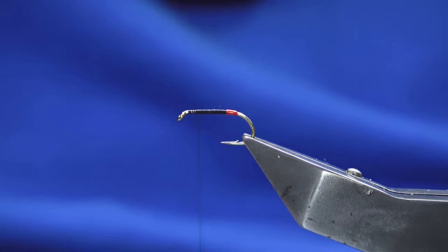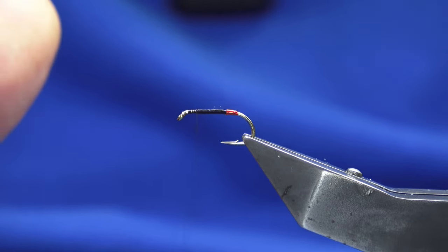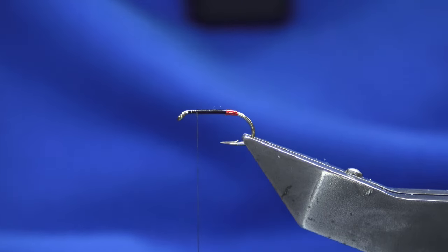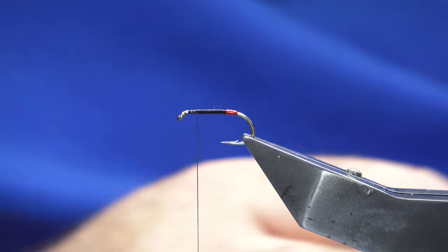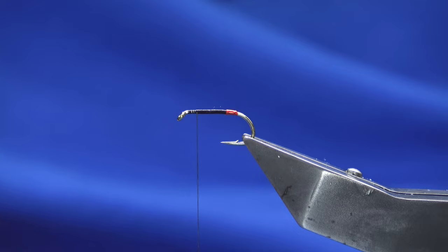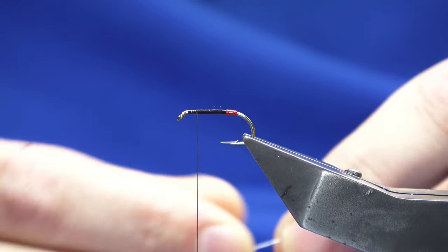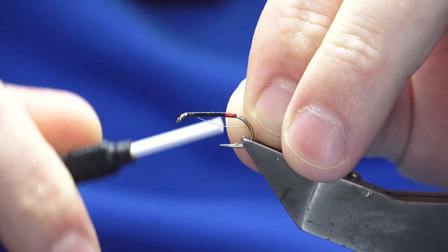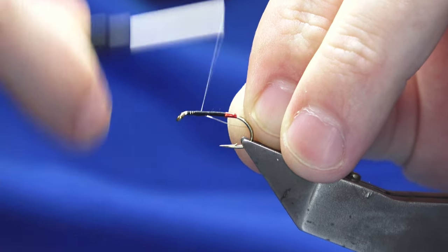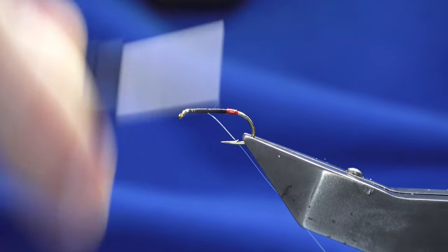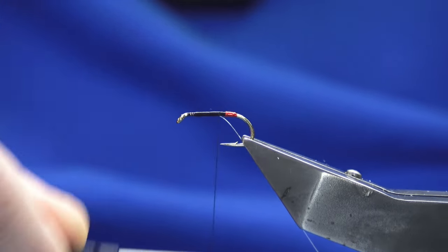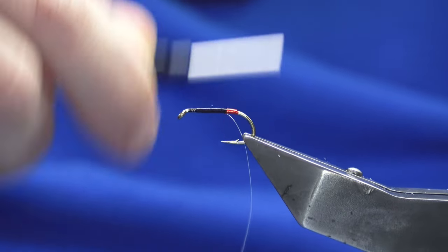Turn away the tinsel. I'm going to flatten the thread out by spinning the bobbin anti-clockwise. The rib I'm going to use to create the impression of segmenting the body is a very fine silver wire - this is Veniard's number 27.